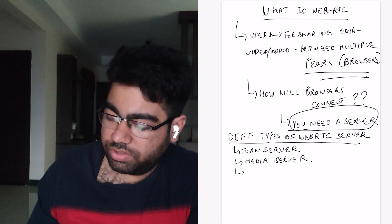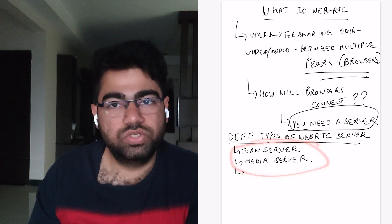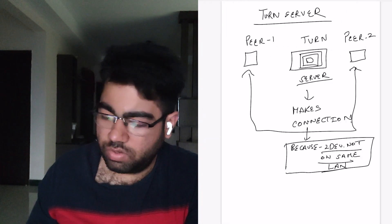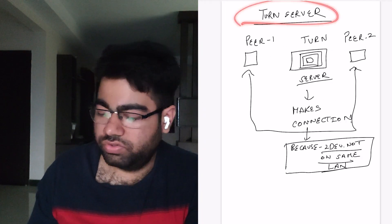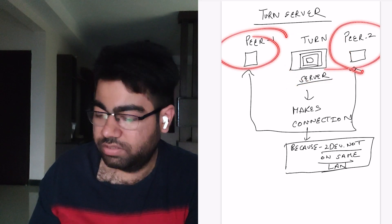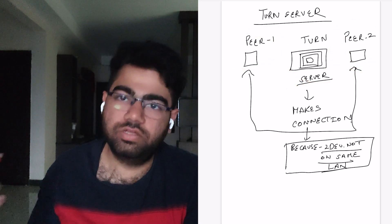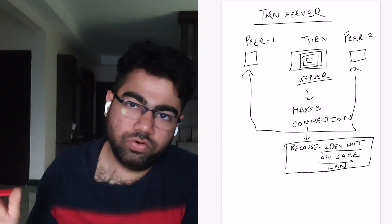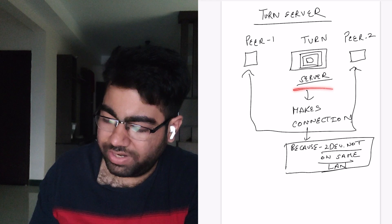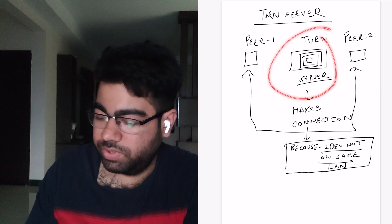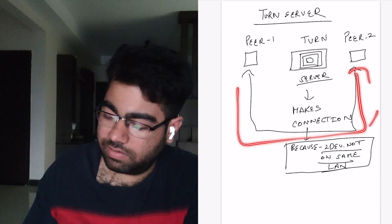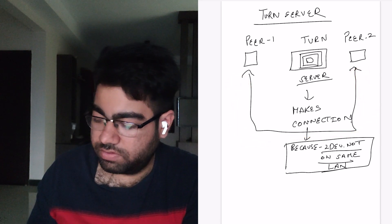There are different types of WebRTC servers. Today we are going to talk about two: the TURN server and the media server. What does the TURN server do? Suppose there is a TURN server and there are two peers trying to make a connection in a group call. The TURN server helps to relay the connection between these two peers so that they can share their data directly with each other, without the server coming in between.